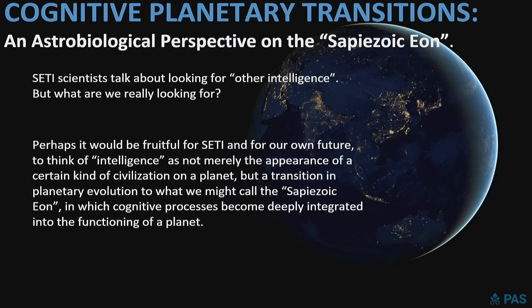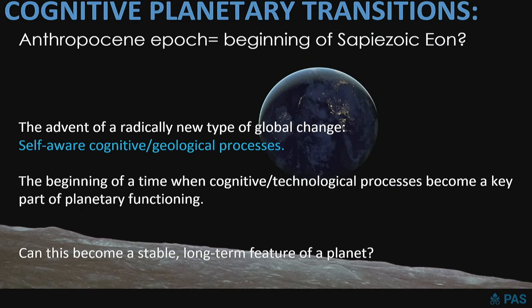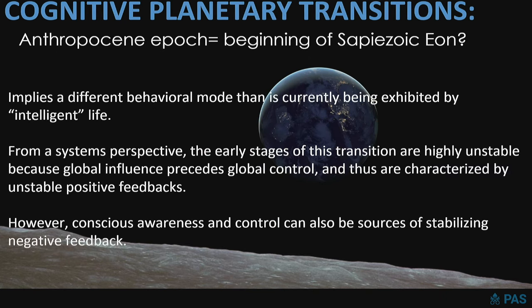Should we think about a Sapiozoic eon? SETI scientists always talk about looking for other intelligence, but what are we really looking for? Perhaps it would be fruitful for both SETI and ourselves to think of intelligence not merely as the appearance of a certain kind of civilization on a planet, but as a transition in planetary evolution to a time when cognitive processes become deeply integrated into the functioning of a planet. This is the advent of a radically new type of global change — what I call self-aware cognitive geological processes. Can this become a stable long-term feature of a planet? The early stages, the proto-anthropocene, are highly unstable because global influence precedes global control, creating unstable positive feedbacks. But conscious awareness and self-control constitute a kind of stabilizing negative feedback.